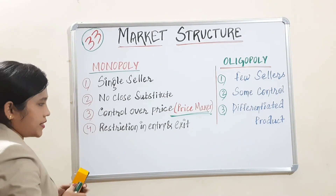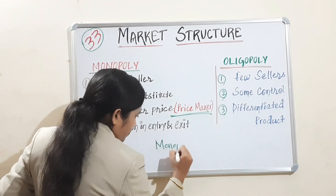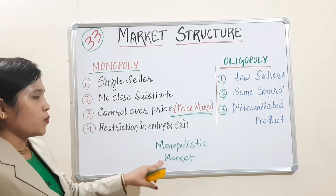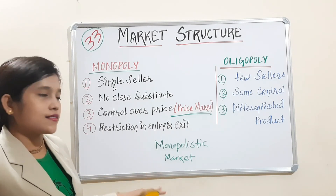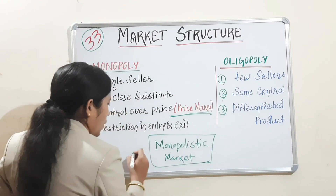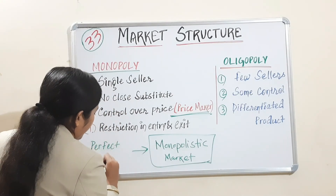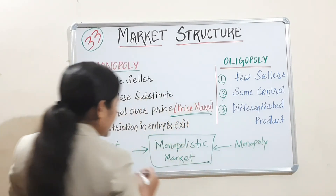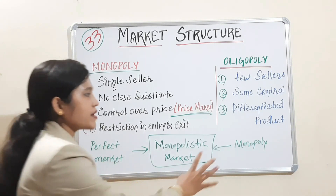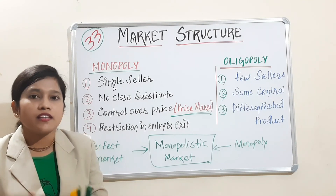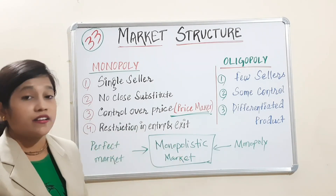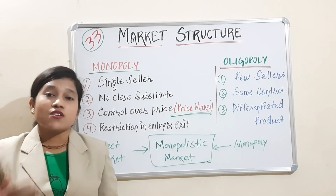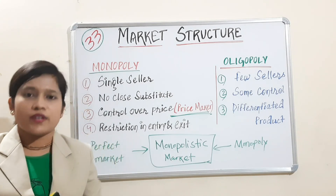The last market is monopolistic market. Monopolistic market is a combination of perfect market and monopoly market — it has taken some characteristics from perfect competition and some from monopoly. We have now covered a brief introduction of all market types: perfect competitive market, monopoly market, oligopoly market, and monopolistic market. Next onwards, we will deal with each individual market and the exact operations happening in that particular market.